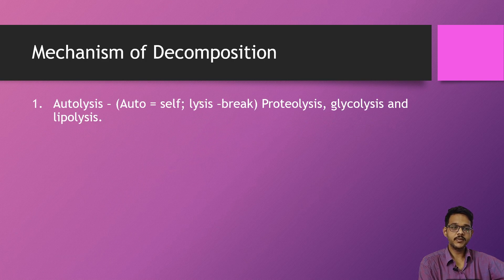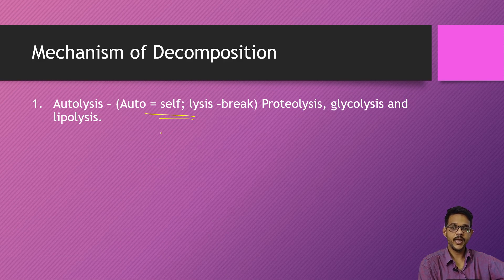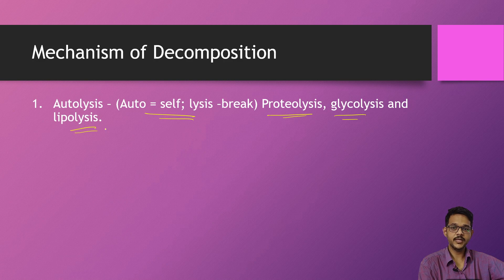Now coming to the mechanism of decomposition. One is autolysis — self-lysis — in which body enzymes present in the intestines and pancreas, such as lipases and amylases, are released into the body. Those enzymes act on the body itself, leading to proteolysis, lipolysis, and the body starts decomposing from the inside — from the intestines — due to the action of pancreatic enzymes.